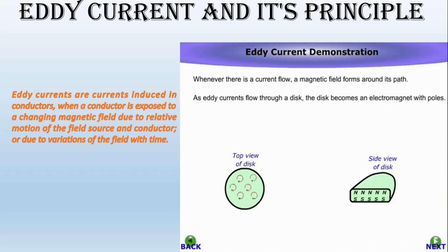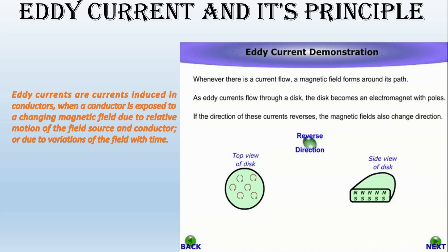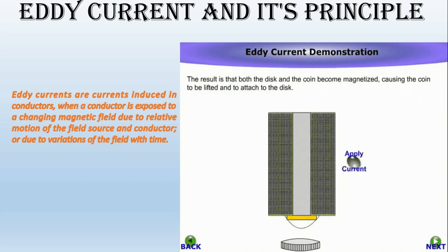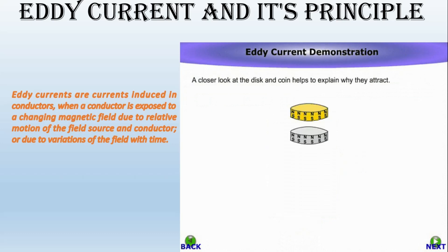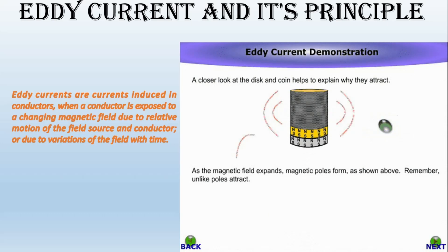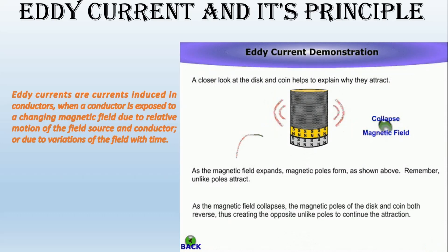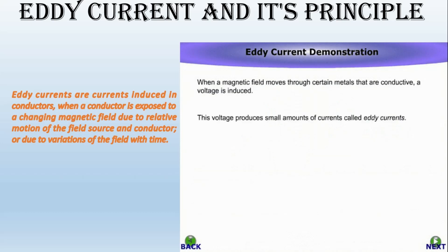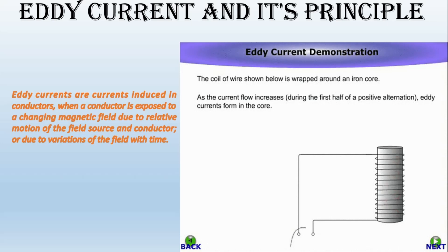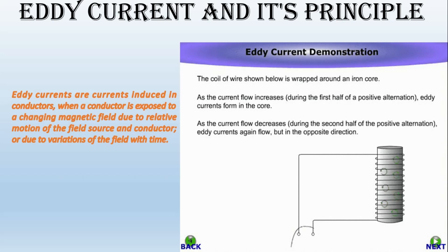Can be automated: relatively uniform parts can be inspected quickly and reliably using automated or semi-automated equipment, for example wheels, boiler tubes, and aero engine discs. Next, little pre-cleaning required: only major soils and loose or uneven surface coatings need to be removed, reducing preparation time. Next, portability: portable test equipment is very small and light, with some of the latest equipment being as small as a video cassette box and weighing less than two kilograms.